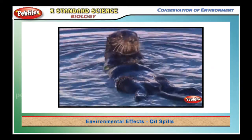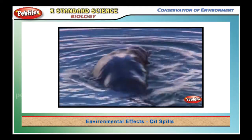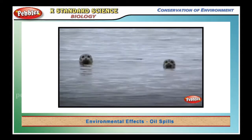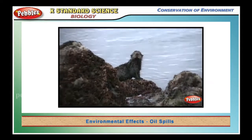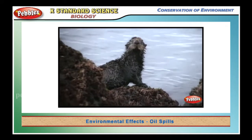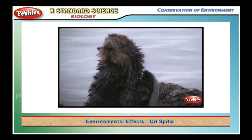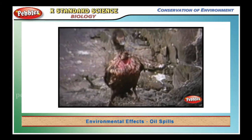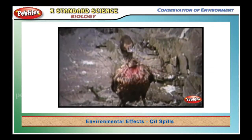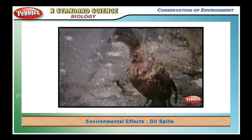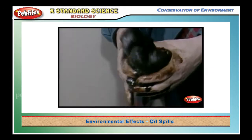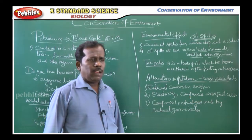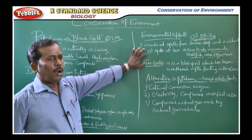The oil spills at sea kills certain animals surviving in the ocean. For example, sea birds, mammals, shellfish and other organisms are affected due to the spills of oil. So this is expectable.